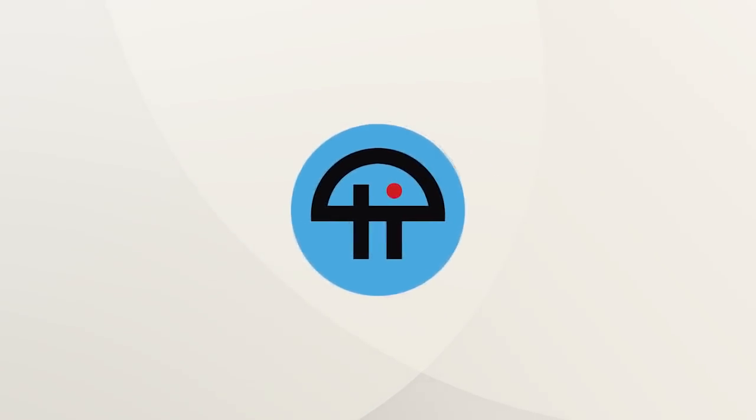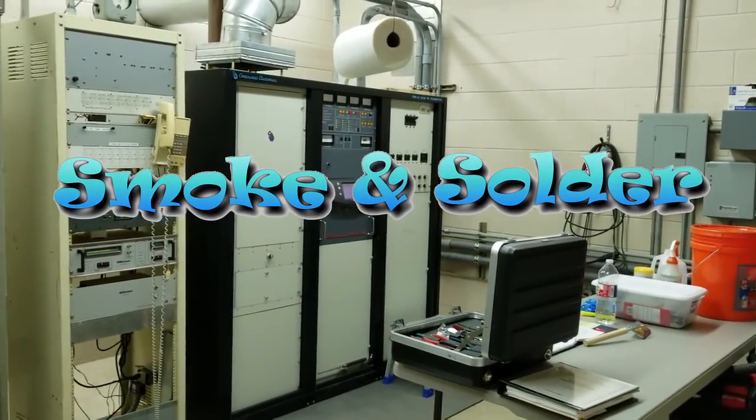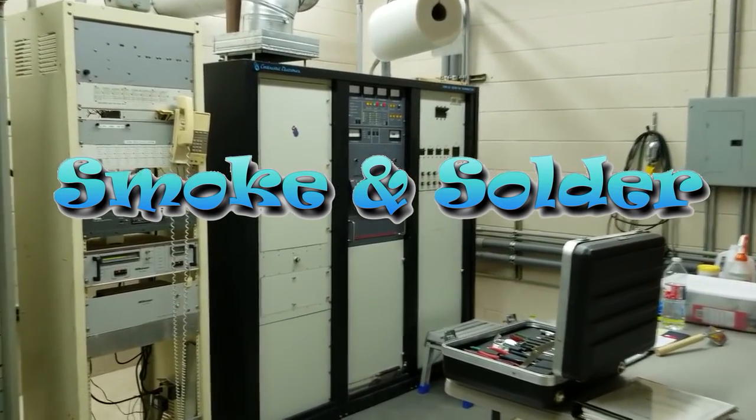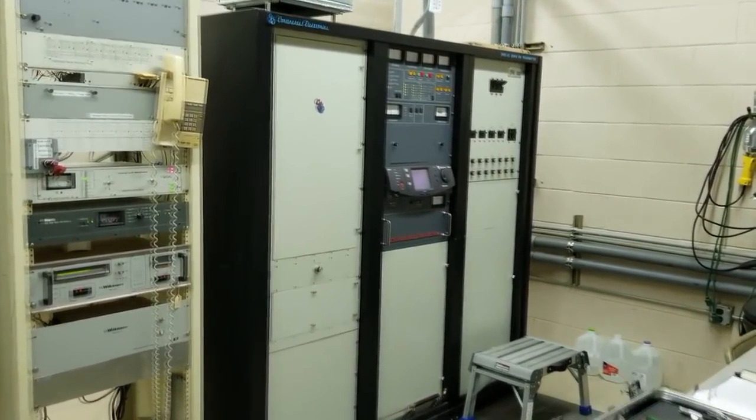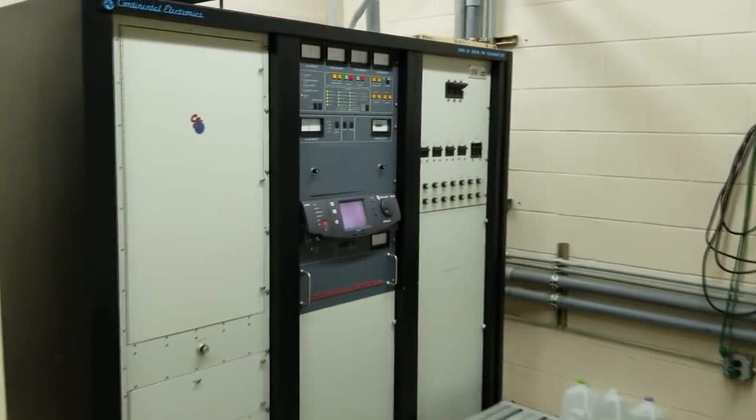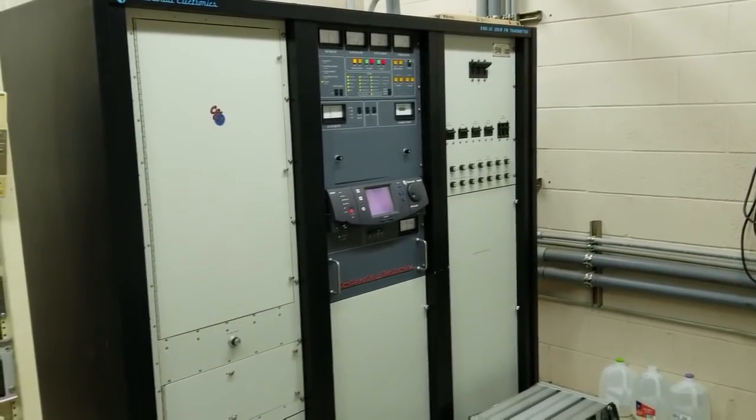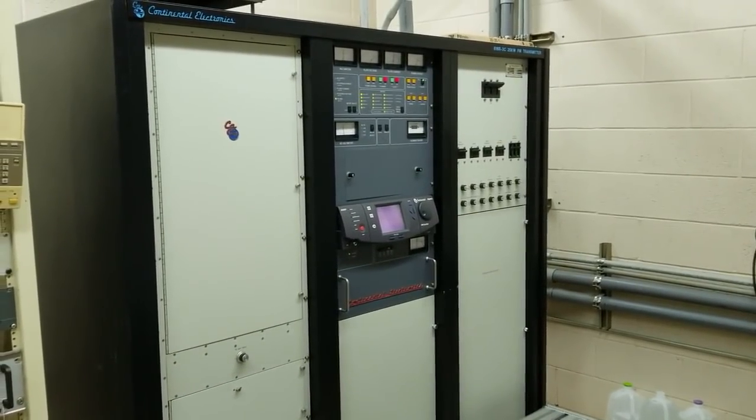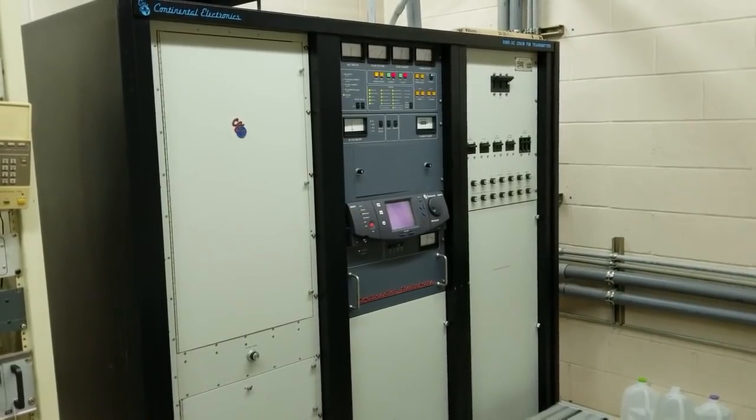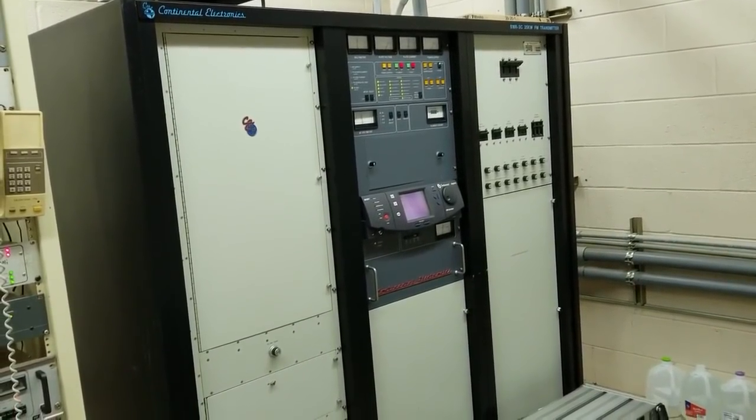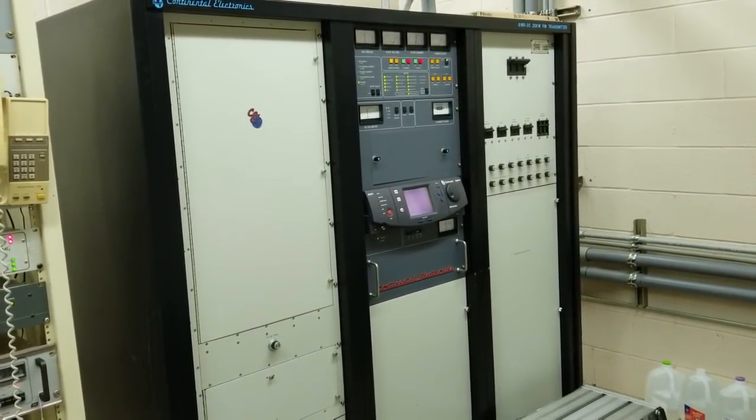This is TWIT. I'm here in an FM transmitter building and that's a 25 kilowatt Continental transmitter and it needs a new tube in it. The tube that's in it now has gone soft, it's no longer producing full power and it's time to replace it.